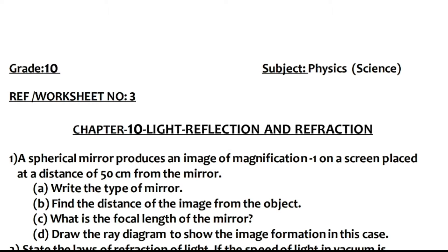Part a: Write the type of mirror. Part b: Find the distance of the image from the object. Part c: What is the focal length of the mirror? Part d: Draw the ray diagram to show the image formation in this case.